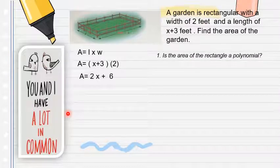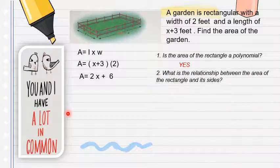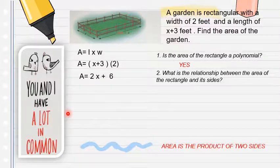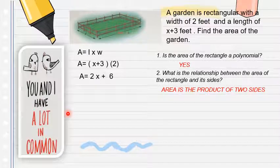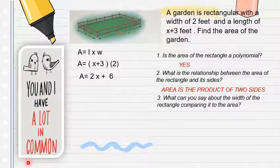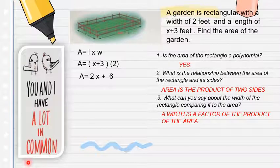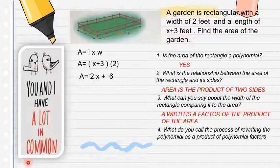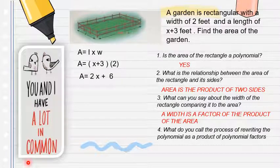Question 1: Is the area of the rectangle a polynomial? Yes. Question 2: What is the relationship between the area of the rectangle and its sides? Area is the product of two sides. Question 3: What can you say about the width comparing it to the area? The width is a factor of the product of the area. Question 4: What do you call the process of rewriting the polynomial as a product of polynomial factors? Factoring.